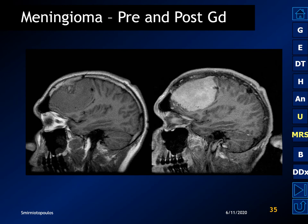Meningiomas are typically easy to see. They almost always have very vivid contrast enhancement on MR, and they can be associated with hyperostosis.